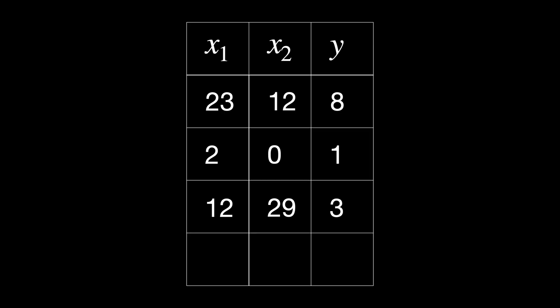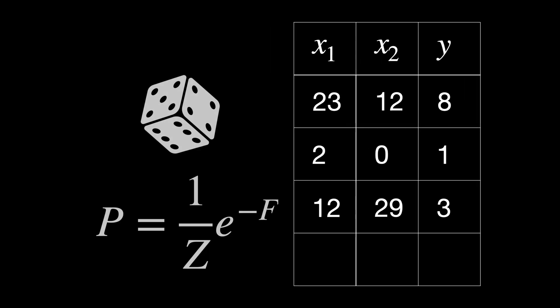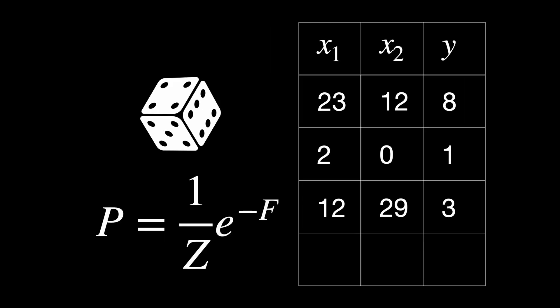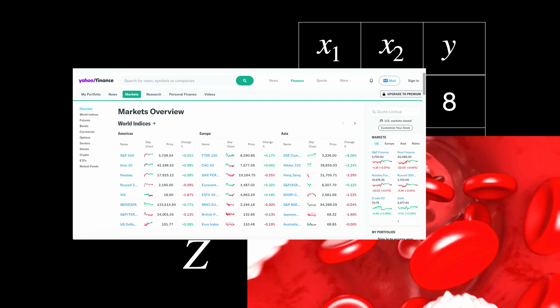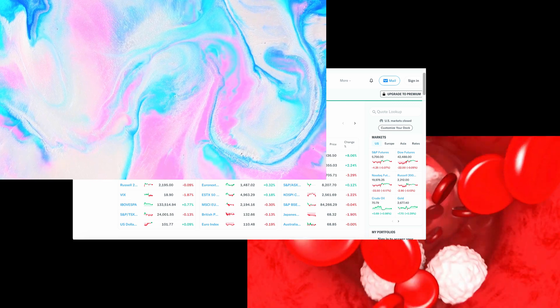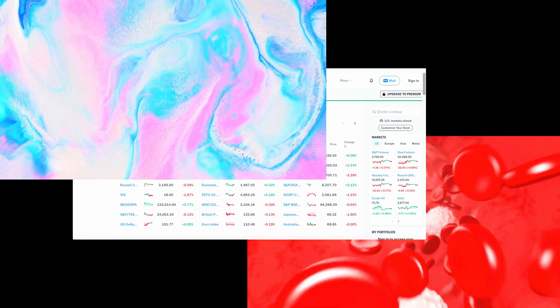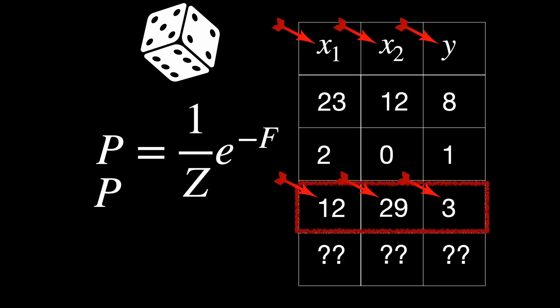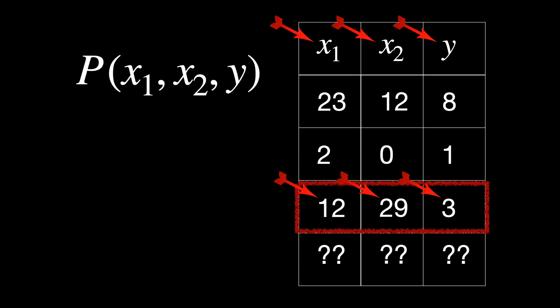In the previous video we discussed that the god equation governs any given spreadsheet of data, regardless of what system the data is coming from—whether it's a human blood test, the stock market, or physical systems like superfluids. We also discussed that the god equation is nothing but the probability function that tells us the chance of a given row in our spreadsheet happening again.